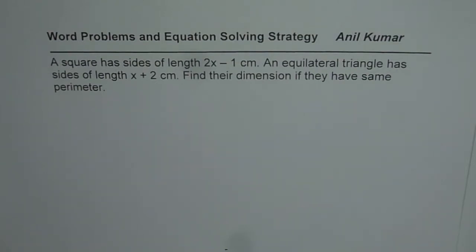The question before us is: a square has side length of 2x-1 cm, an equilateral triangle has sides of length x+2 cm. Find their dimensions if they have same perimeter.